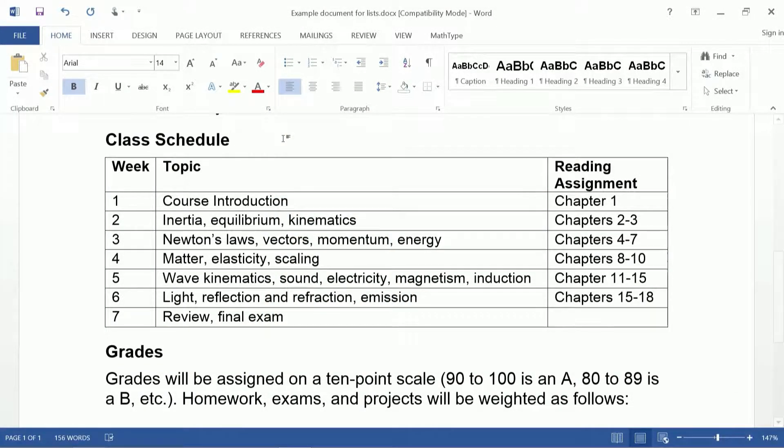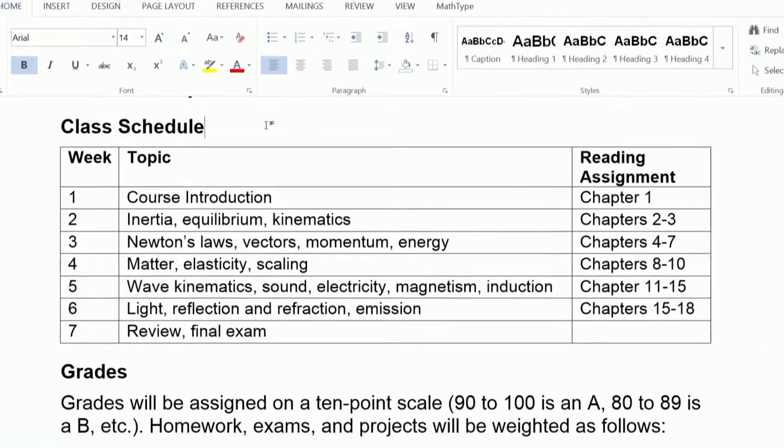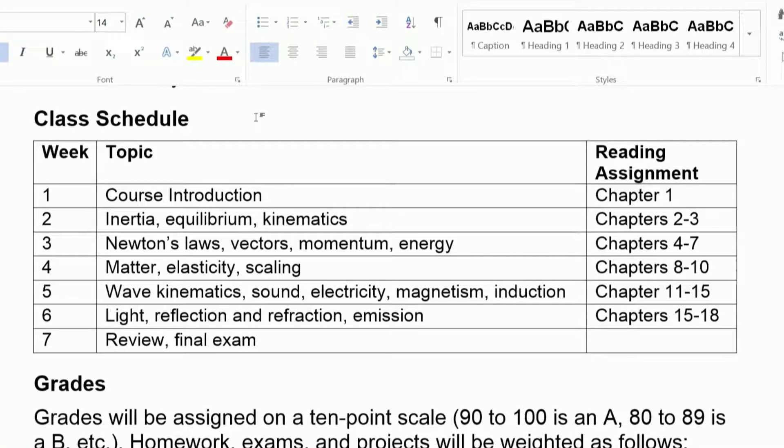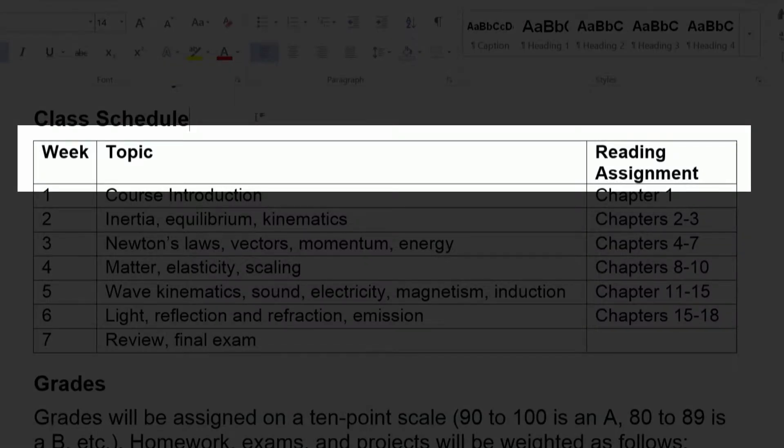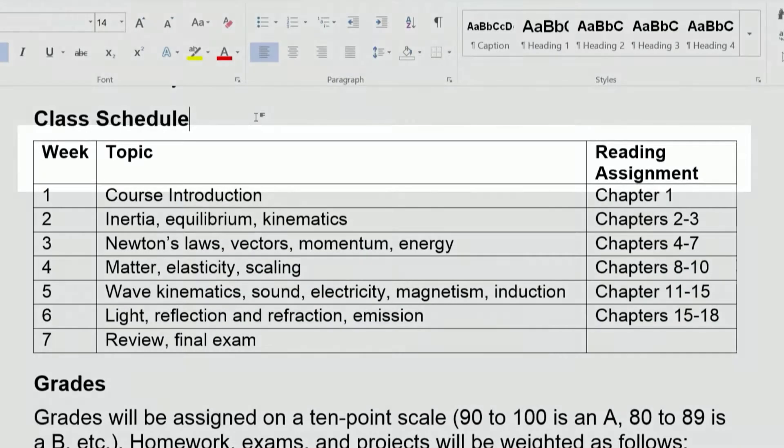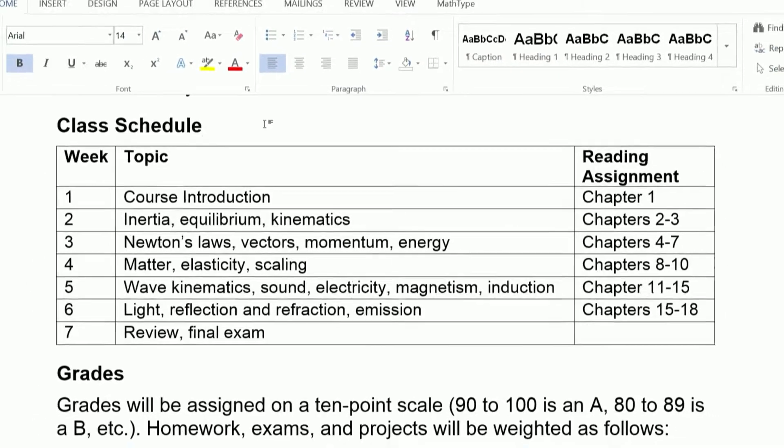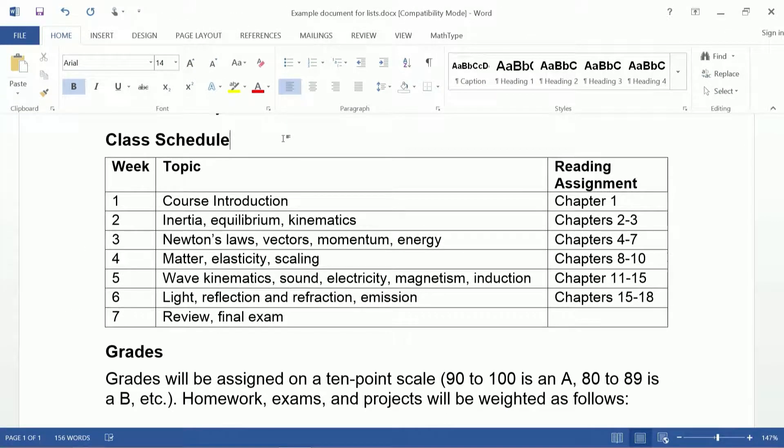Let's look at this table in my example document under Class Schedule. Sighted users can quickly identify the column headers and use them to interpret the table. For those who can't see the table, however, we need to include non-visual formatting with the column headers so they can interpret the table, too.